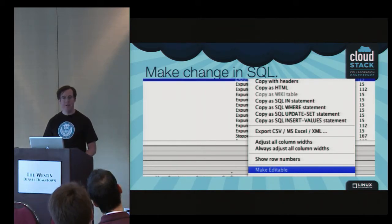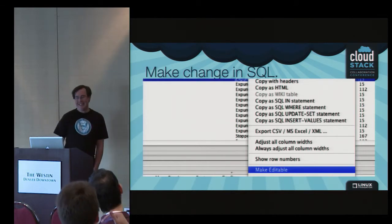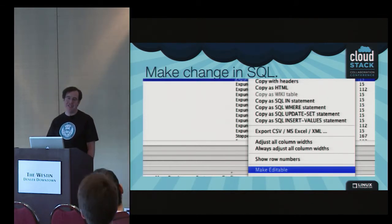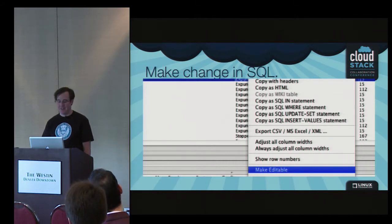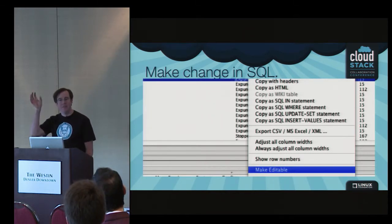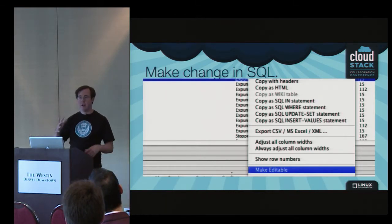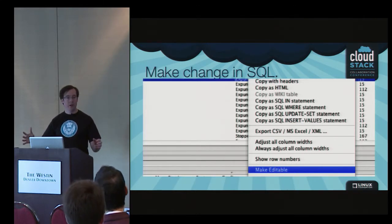Question: do we have good documentation of the database layout beyond just 'describe table'? No. People ask about that occasionally. I've taken a stab at running a commercial program to map it out and generate it. Has everyone here actually seen the CloudStack database at all? The relationships are not enforced — there are no actual enforced foreign key constraints.